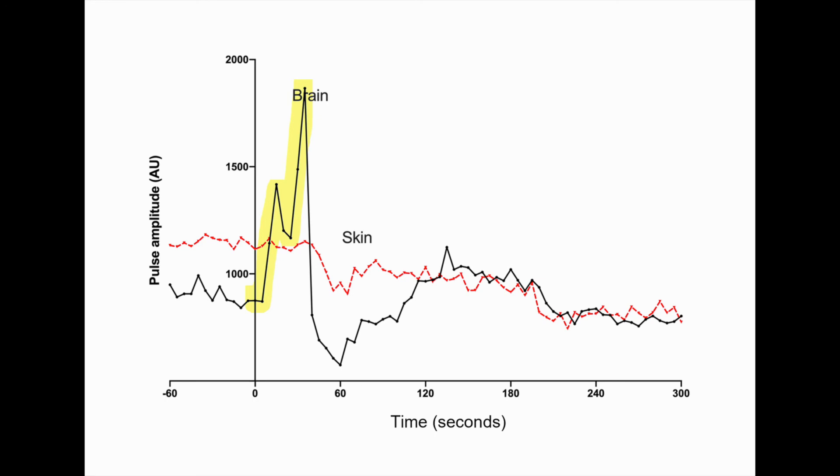This increase may represent an increase in cerebral blood flow due to cerebral vasodilation combined with increased blood pressure. It may also represent the increase in intracranial pressure forcing the brain closer to the skull and therefore more light from the sensor reaching the brain tissue.